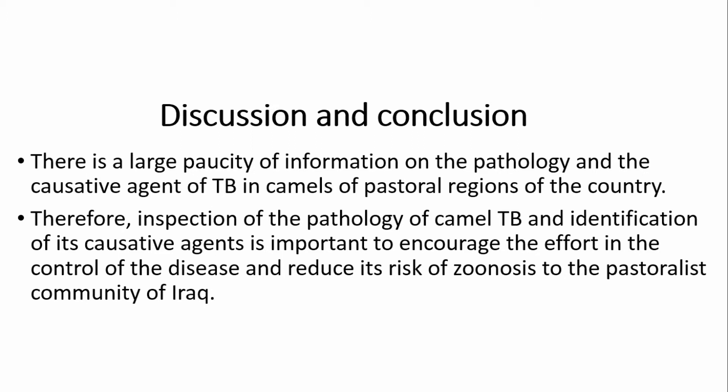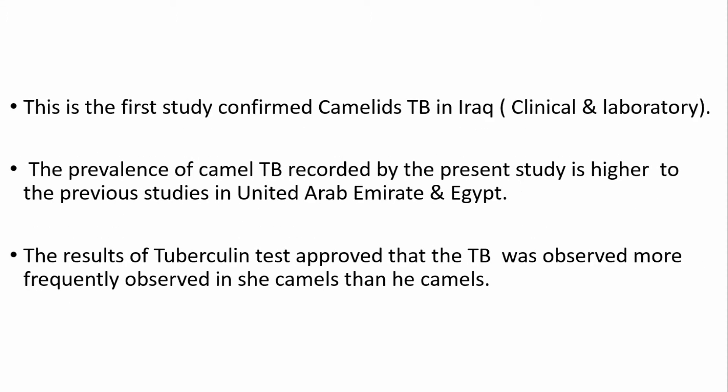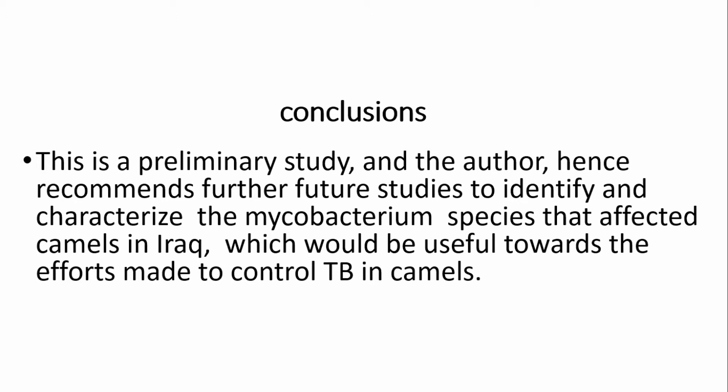Discussion and conclusion: There is a large gap in information on the pathology and causative agents of TB in camels of pastoral regions. Inspection of camel TB pathology and identification of causative agents is important to encourage control efforts and reduce zoonotic risk to the pastoral community of Iraq. This is the first study to confirm camelid TB in Iraq by clinical and laboratory approaches. The prevalence recorded is higher than in previous studies from the UAE and Egypt. TB was observed more frequently in female camels than in male camels. The authors recommend further future studies on camel TB in Iraq to support control efforts.